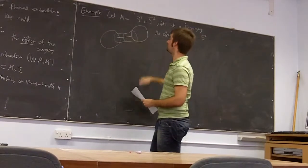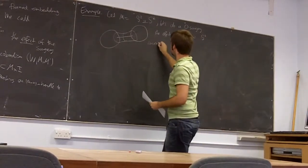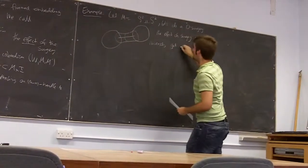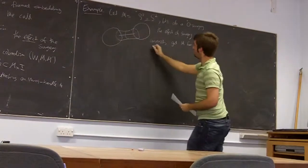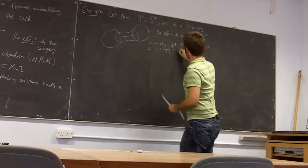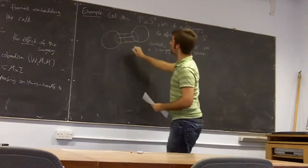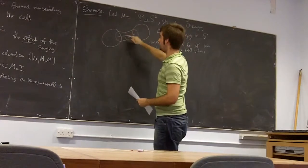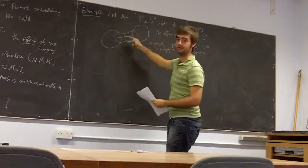And a one-surgery on S2. So conversely, you can get M from M-prime by a one-surgery on the belt sphere. The belt sphere viewing is the other way — the belt sphere is just this S0. So the attaching sphere and the belt sphere are switching.